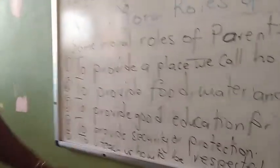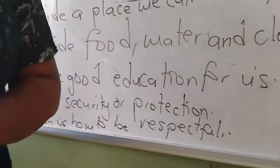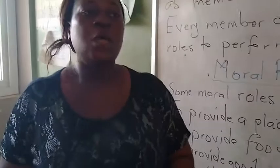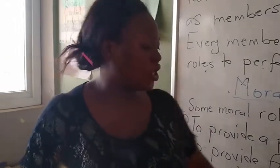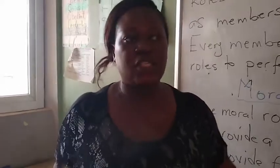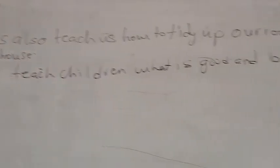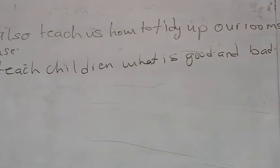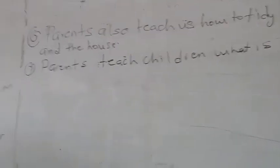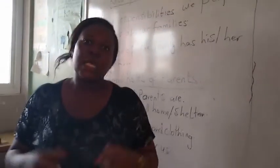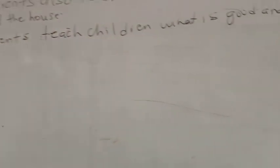Parents are also supposed to teach us how to be respectful. The upbringing of every child is the responsibility of their parents. Parents are supposed to bring up the child in a manner that everyone will know the child is a respectful boy or girl. Parents also teach us how to tidy up our rooms. Parents are supposed to teach children how to be neat. Our environment should be neat so that we can be healthy, and parents teach children what is good and what is bad.